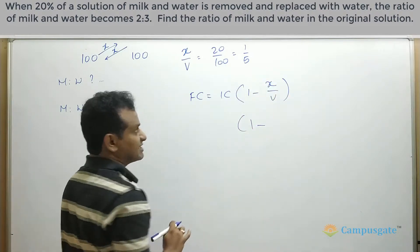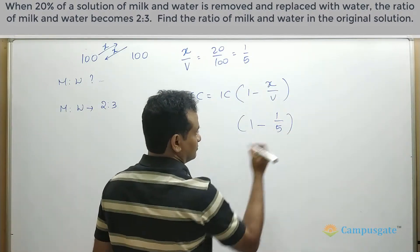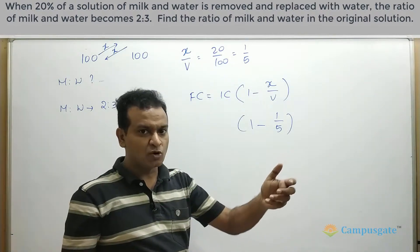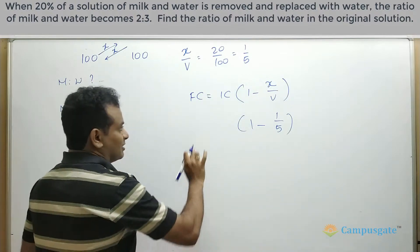Here in the part of the x by v, you can simply put 1 by 5. That means if the initial volume is 5 liters, 1 liter is being removed. Again, we are adding 1 liter to it. Simple.